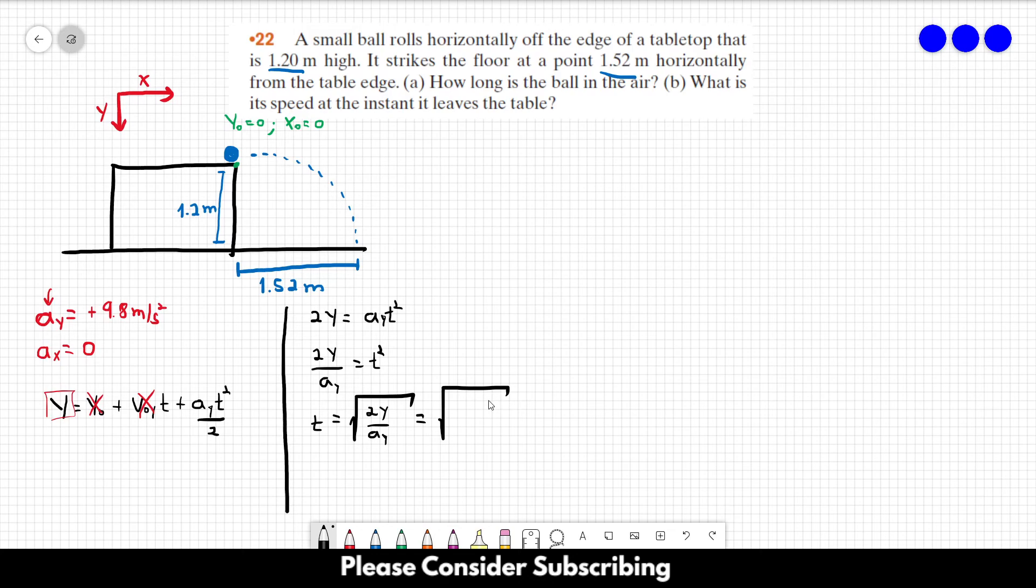And this is equal to the square root of 2 times 1.2 divided by 9.8, and this gives us 0.495 meters per second. So this is the answer of letter A.